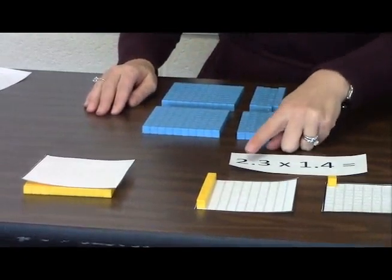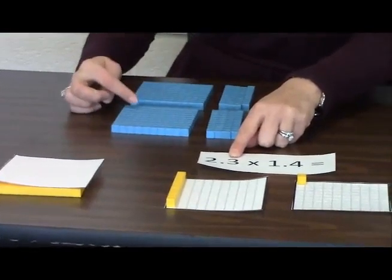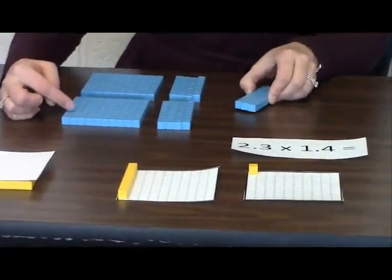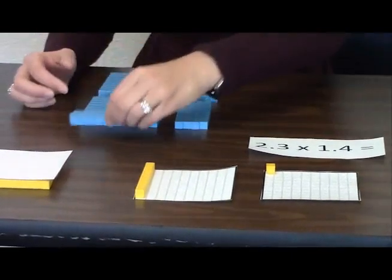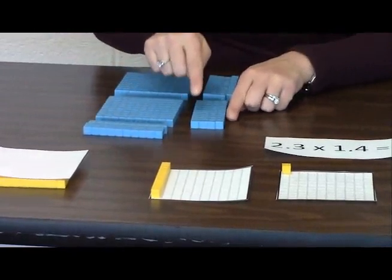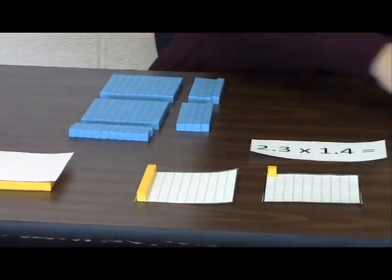Now the problem says two and three tenths. So I'm going to need to make three tenths of a group. In order to do so, I'm thinking, what is three tenths of a whole? And I know that to be three tenths. And now I need to find three tenths of my four tenths, which is twelve hundredths.